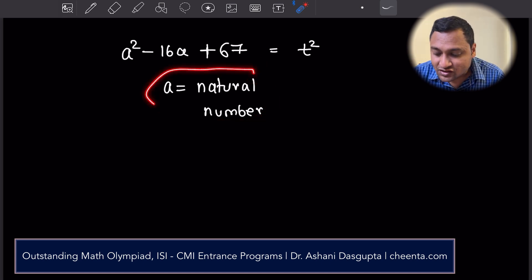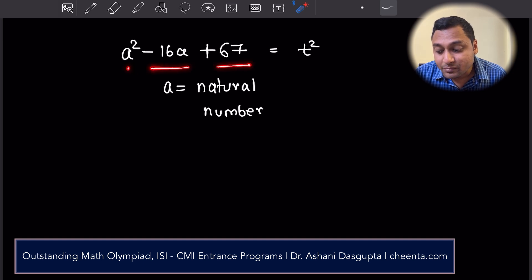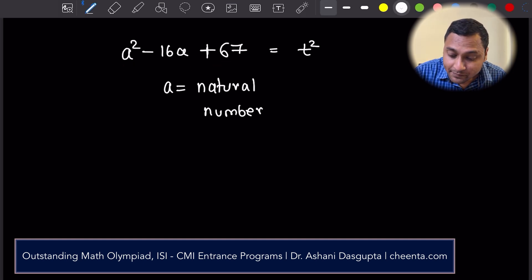All such natural numbers, such that a squared minus 16a plus 67 is a perfect square.